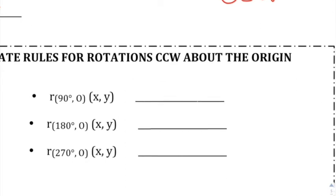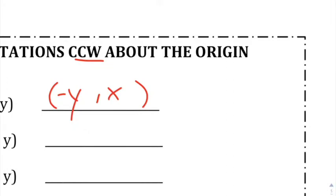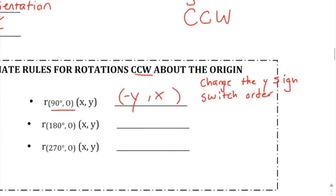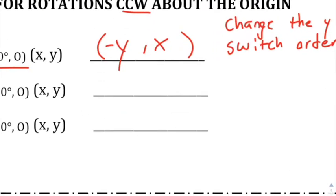Here are a couple of rules for rotations. For 90 degrees counterclockwise, you're going to switch the order — you say Y, X — and then change the Y coordinate's sign. So first change the Y sign, then switch the order. That's an easy rule to remember.